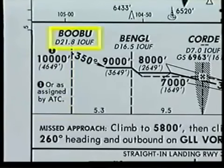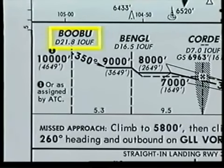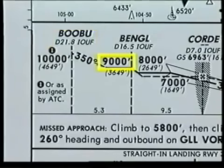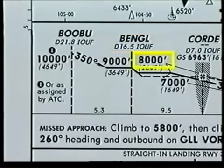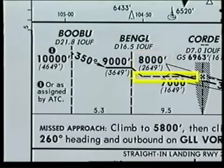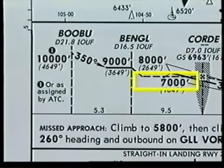This note indicates that you should maintain a minimum altitude of 1,000 feet unless you are assigned a different altitude from ATC. After you have passed the Boo Boo intersection, which may be identified by the 21.8 DME of the ILS localizer, you can descend to an altitude of 9,000. After passing 16.5 DME, which is Bengal intersection, you may descend to 8,000 feet to intercept the glide slope. However, for the localizer-only approach, you may descend to 7,000 feet.